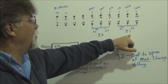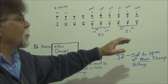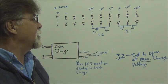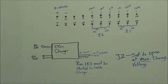Same thing with J1 over here. 18 to 19, that's the normally closed contacts. And 19 to 20 are the normally open.